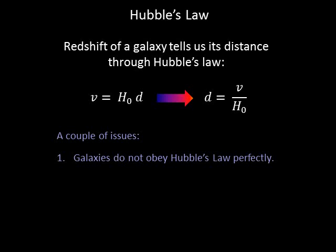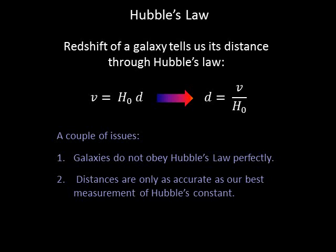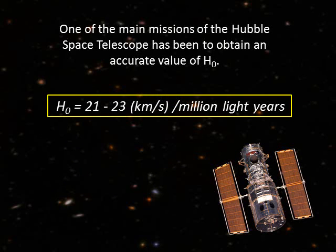There are a couple of issues, though. First, galaxies do not obey Hubble's Law perfectly — nearly all galaxies experience gravitational tugs from other galaxies, and those tugs will cause the speed to differ from what is predicted by Hubble's Law, making the distance calculation a bit off. Second, the distances calculated are only as accurate as our best measurement of the Hubble constant. One of the main missions of the Hubble Space Telescope has been to obtain an accurate value of H naught, using Cepheid variables in galaxies out to about 100 million light-years. Currently, the accepted value for the Hubble constant is between 21 and 23 kilometers per second per million light-years.